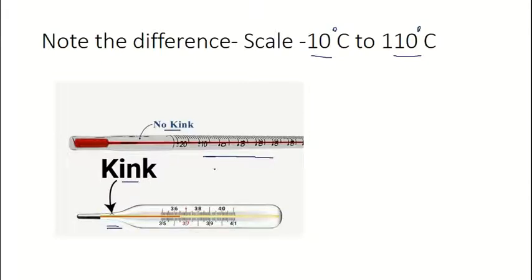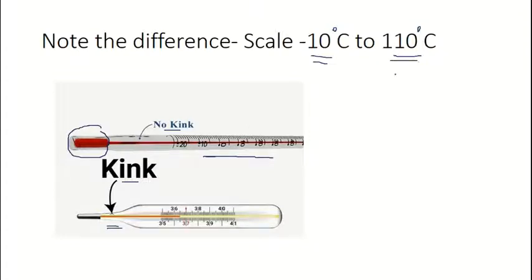Because there is no kink, you must measure the temperature only when the bulb is surrounded by the substance all around — otherwise the mercury will drop down and you will not get the correct temperature. The graduation of a laboratory thermometer is from minus 10 degrees Celsius to 110 degrees Celsius.